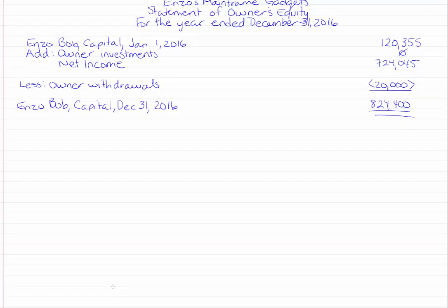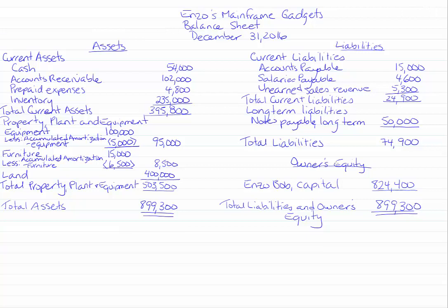Then we prepare the balance sheet: assets equals liabilities plus owner's equity. The only account on the balance sheet that's different is the inventory account. Notice we're not using the inventory balance from the trial balance — we're using the inventory balance from the count at year end. Other than that, our balance sheet hasn't changed.